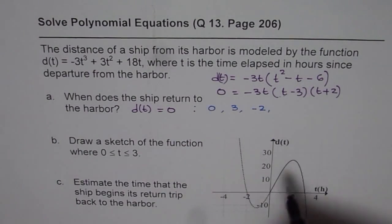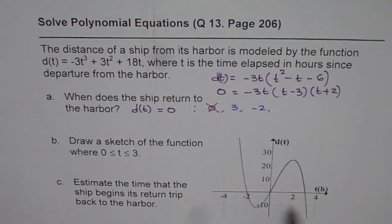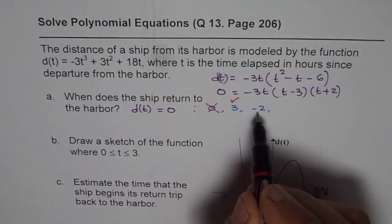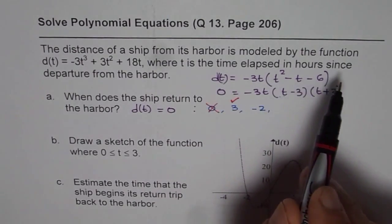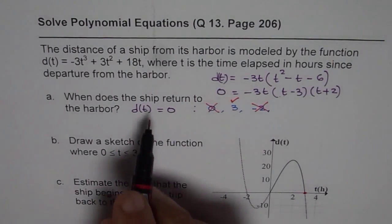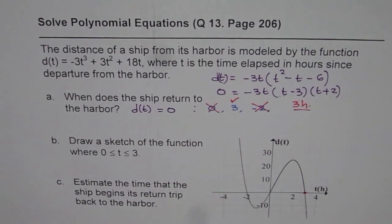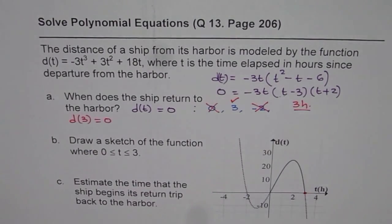t equals 0 is the starting point. The ship really started at this point, so it was really at the harbor but it is not returning. At 3 it returns back to the harbor. Minus 2 is not in our domain since time is after departure. Therefore the answer for this question is 3 hours. So d(3) equals 0.